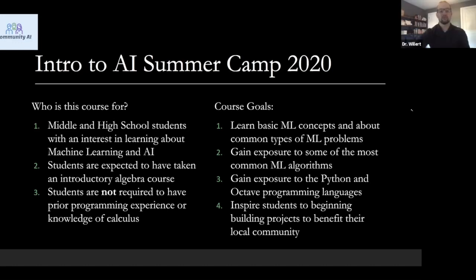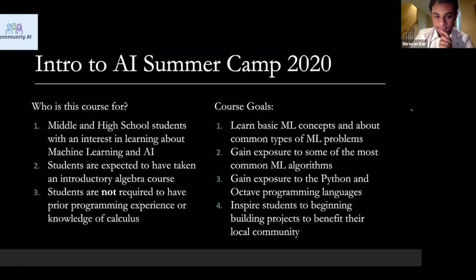As we give an introduction to this camp, we've got to discuss a few quick administrative items. First, who is this course for? We've found the right audience since most individuals who signed up are middle and high school students. We're looking for people who have curiosity and interest in machine learning and AI. We expect students have some familiarity with algebra. Machine learning and AI are typically taught to individuals with a background in calculus, but we're trying to make this as accessible to as broad an audience as possible. We don't require any prior programming experience or knowledge of calculus.